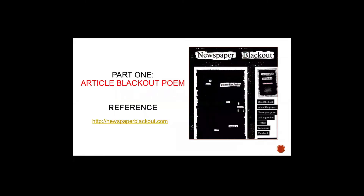Austin Kleon is known for publishing advice to people who want to implement creativity in their everyday lives. One way to do that is by appropriating newspaper articles — you take part of an article, select certain words you want to keep to create a poem, and black out the rest. You're appropriating something that already exists and recreating it into your own literary work.